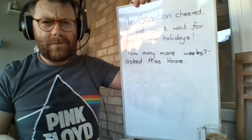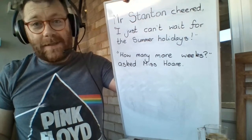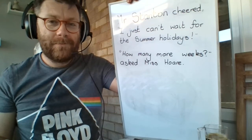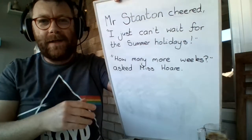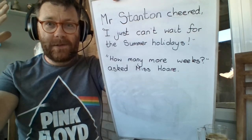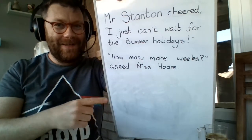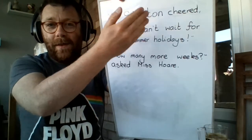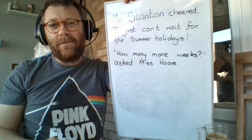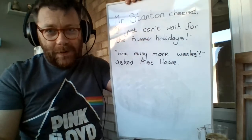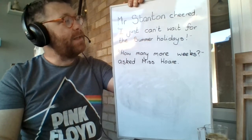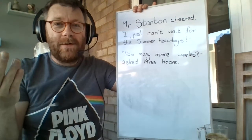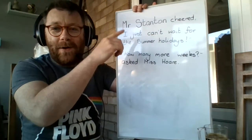Here's our sentence: "I just can't wait for the summer holidays," Mr. Stanton cheered. "How many more weeks?" asked Ms. Hall. So what I want you to do is write the sentence at the top of your page, then underneath it draw a picture of these two characters talking to each other with these words in speech bubbles. I can't wait to see your pictures — your representation of what these characters look like. So: "I just can't wait for the summer holidays," Mr. Stanton cheered. "How many more weeks?" asked Ms. Hall. I would like a picture of both characters with those speech bubbles, please.